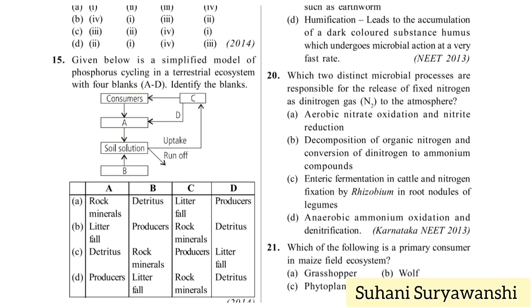Which two distinct microbial processes are responsible for release of fixed nitrogen as dinitrogen gas to the atmosphere? Options include aerobic nitrate oxidation and nitrate/nitrite reduction; decomposition of organic nitrogen; enteric fermentation in cattle and nitrogen fixation by Rhizobium; and anaerobic ammonium oxidation and denitrification. The correct answer is option D — anaerobic ammonium oxidation and denitrification.